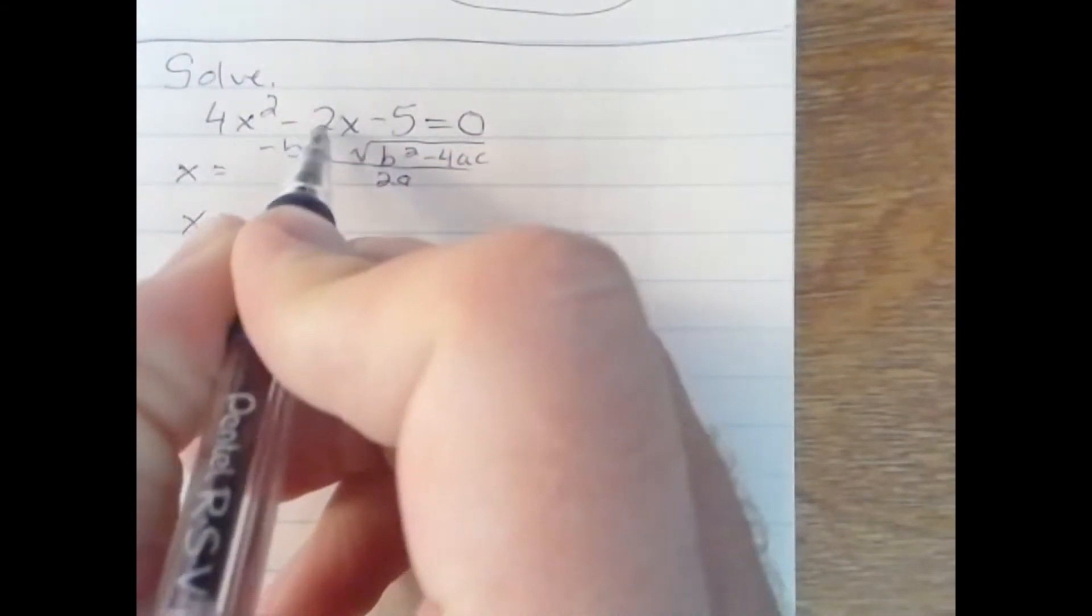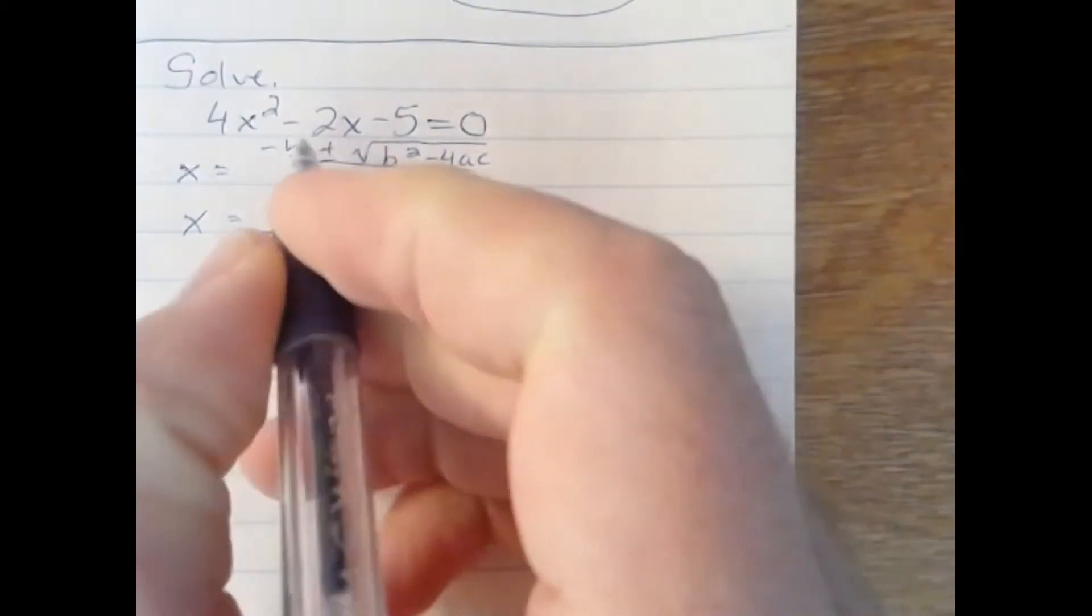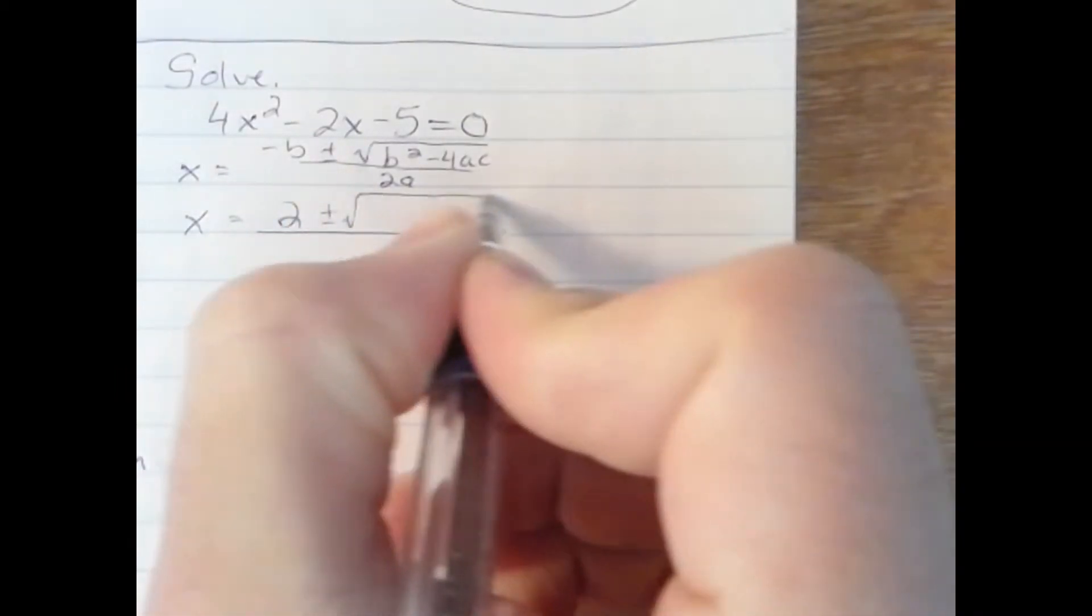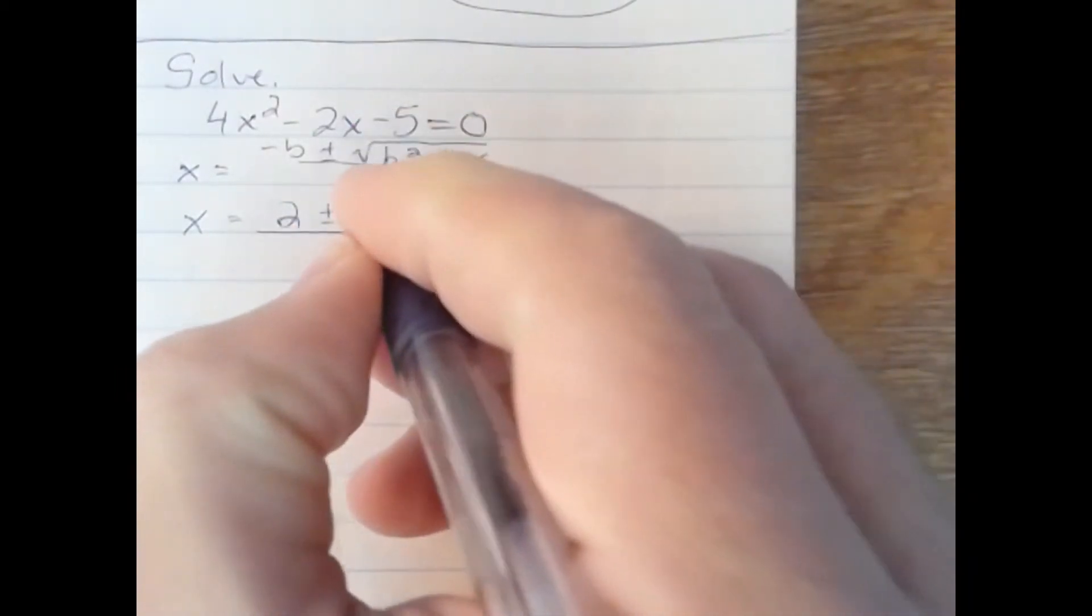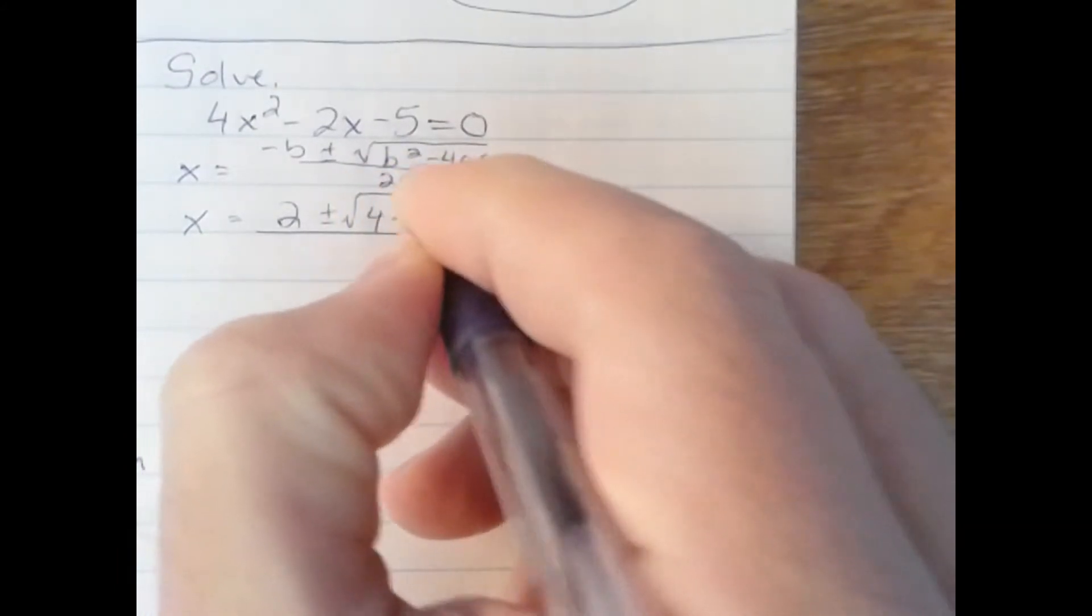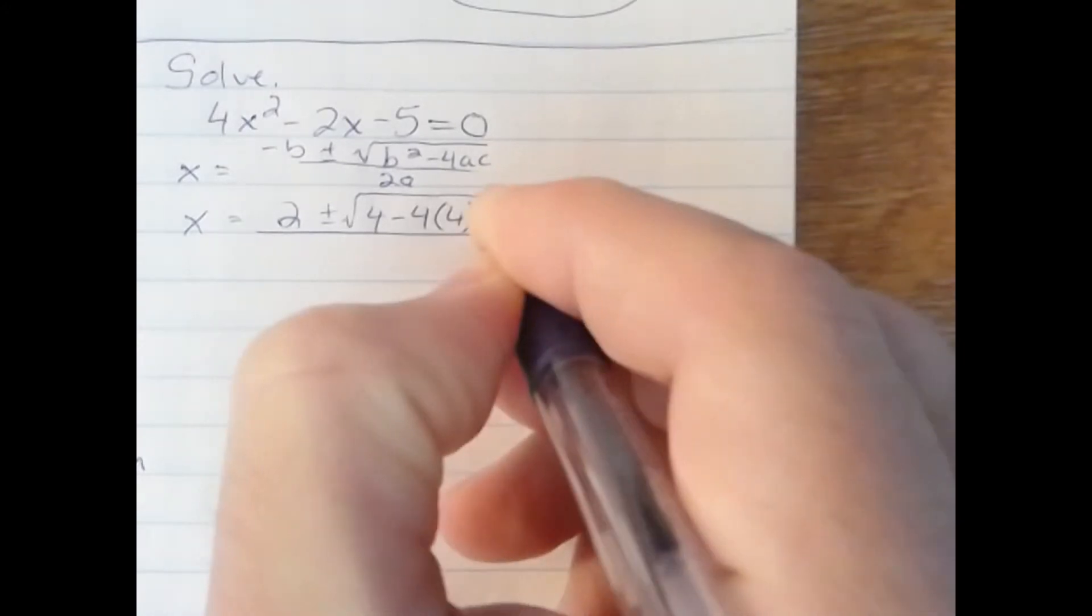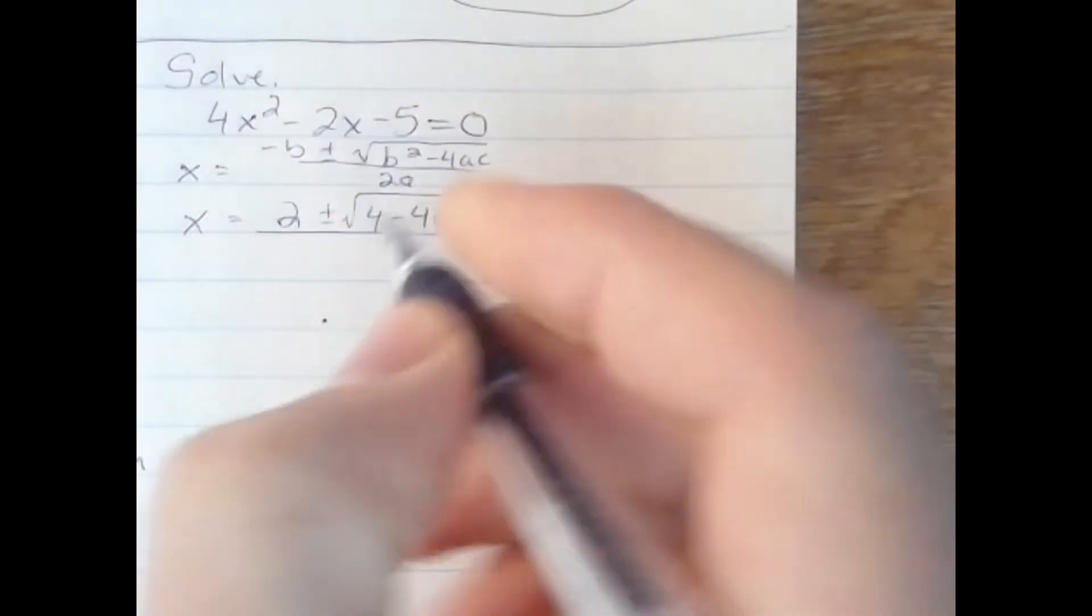Well, our a is 4, our b is negative 2, and our c is negative 5. So let's plug in everything we know. Negative b would be positive 2 plus or minus square root 2 squared would be 4 minus 4 times the a number times the c number. 2 times the a number would be 8.